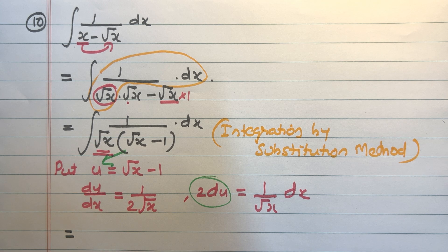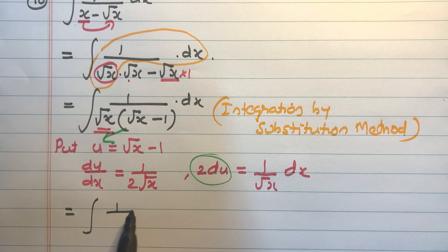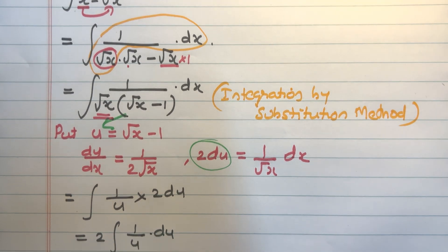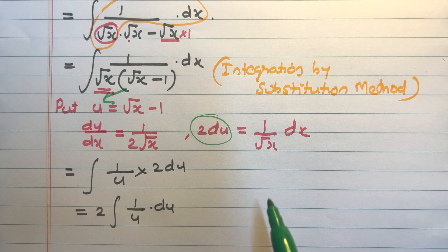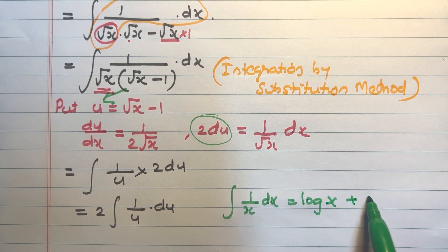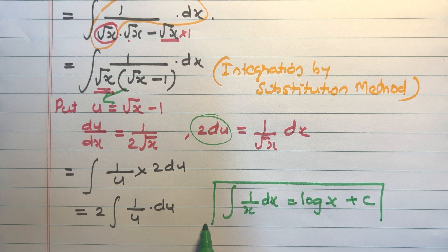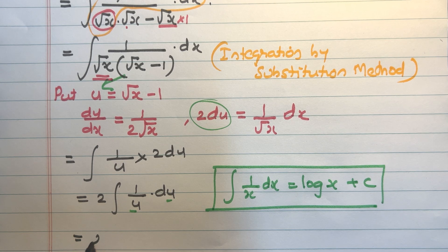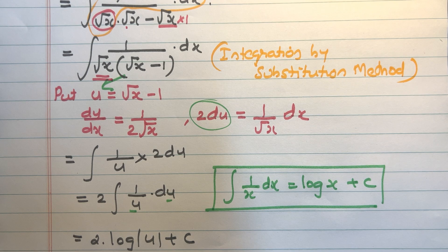So the integral becomes integral of (1/u) into 2 du, which equals 2 integral of 1/u du. Using the formula integral of 1/x dx equals log x plus c, this gives 2 into log u plus c. Substituting back, u equals root x minus 1, so the answer is 2 log(root x minus 1) plus c.